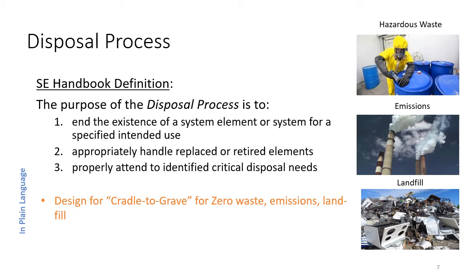The System Engineering Handbook defines the disposal process as having three components. First, to end the existence of a system or system element for a specified intended use — the system is done and we're shutting things down. Second, to appropriately handle, replace, or retire elements during the operation phase. Third, to properly attend to identified critical disposal needs at any point in the life cycle. In plain language, system engineers use the phrase 'cradle to grave' — from concept to the end — and we want to design the system for zero waste, zero emissions, and zero landfill.